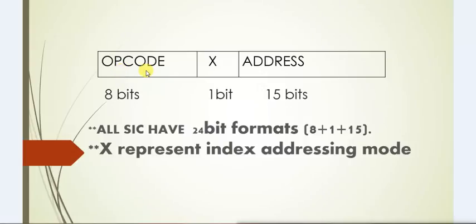We can see here the first field is opcode, it is 8 bits, and the second field is X. Here we will see below that X represents index addressing mode.